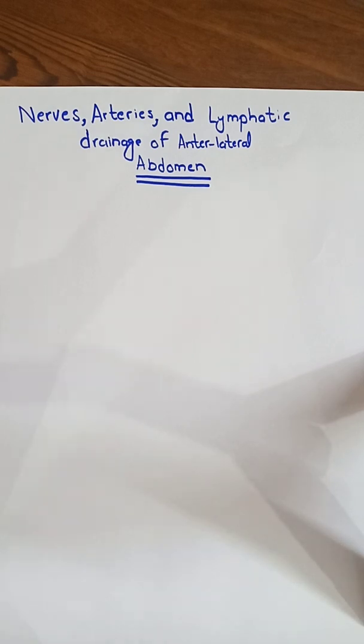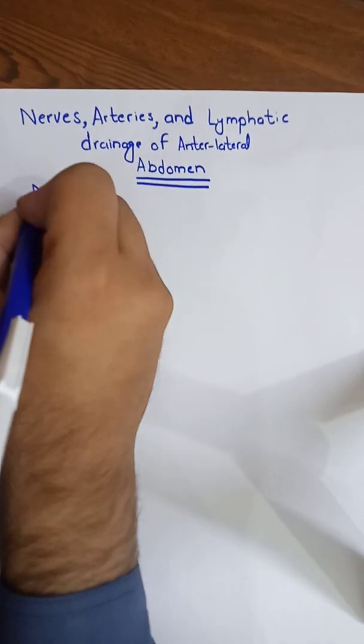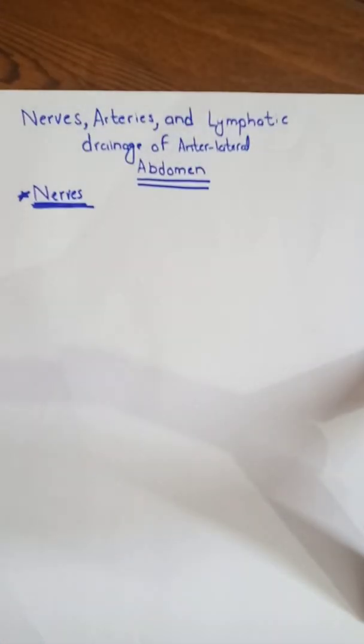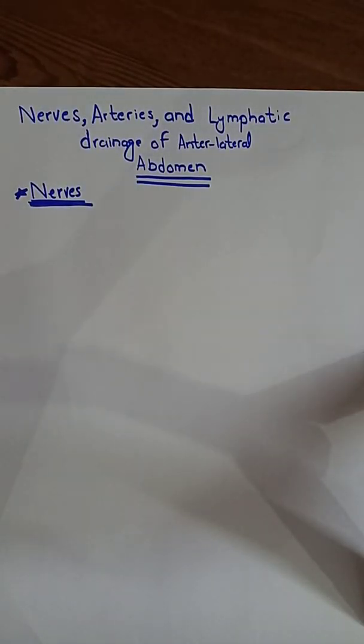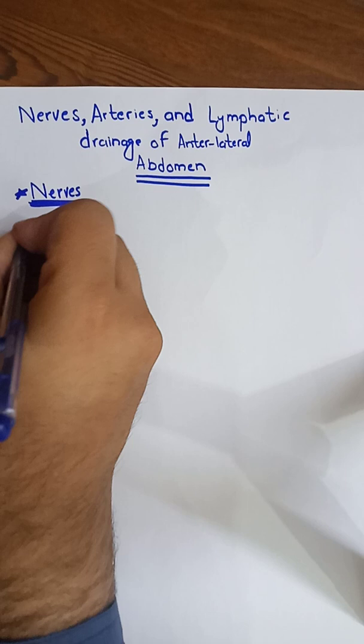Assalamu alaikum. Today we are going to discuss the nerves, the arteries, and the lymphatic drainage of the anterior lateral abdominal wall. First we will see the nerves, and we will present everything in the form of a flowchart so that it will be easy to remember. The nerves supplying the anterior lateral abdominal wall include the thoracoabdominal nerve, the subcostal nerve, and the first lumbar nerve. We will discuss the thoracoabdominal nerves first.